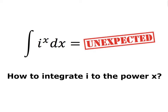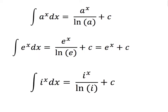Let's see what we might think might happen if we use the idea of how to integrate a to the x. The integral of a to the x is a to the x over ln(a) plus c. You might know the special case: the integral of e to the x is e to the x over ln(e), but ln(e) is just 1, which is why the integral of e to the x just gives e to the x. So you might therefore think, if complex numbers follow the same idea, we're going to get i to the x over ln(i) plus c. We'll see if we can prove whether that's true.